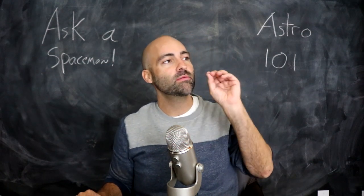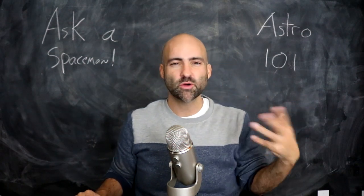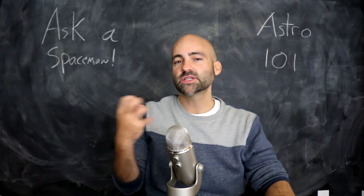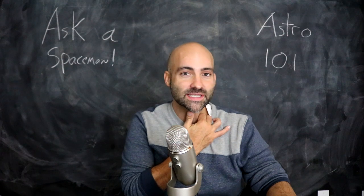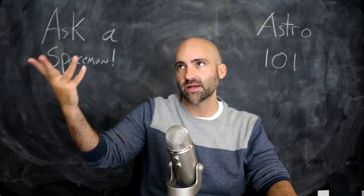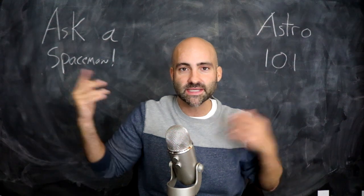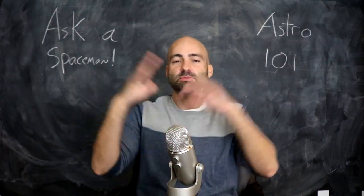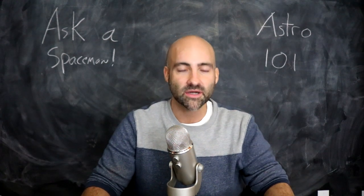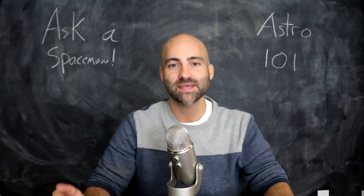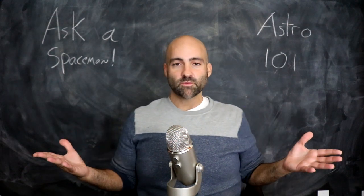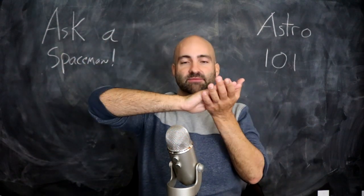When small-mass stars form — no bigger than about two times the mass of the Sun — in the protostar stage they're called T Tauri stars, named after the first object we identified that looks like this. If it's a much more massive star, at this embryonic stage it's called a Herbig Ae/Be star. Either way, what you get is a disk of material around the collapsing protostar.